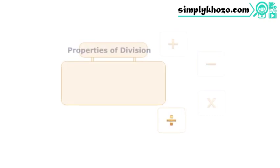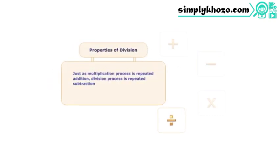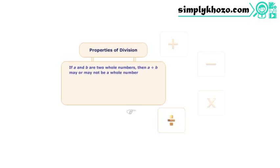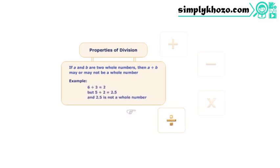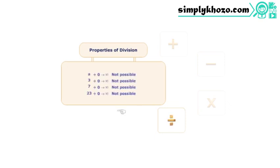The operations of multiplication and division are inverses of each other. The closure property of addition and multiplication do not hold true in case of division. Division by zero is a meaningless operation.